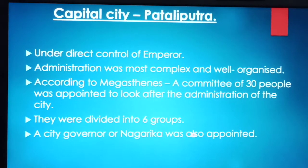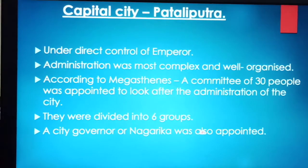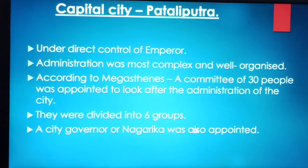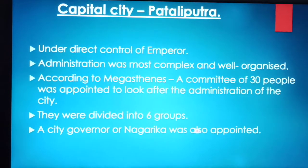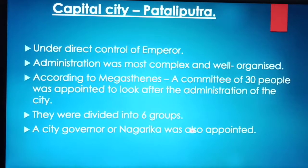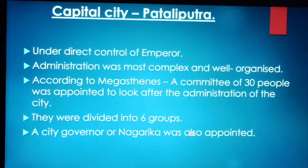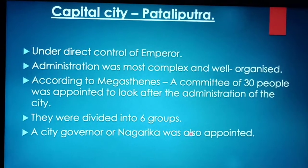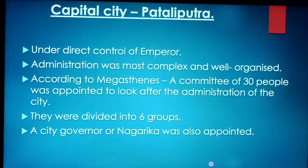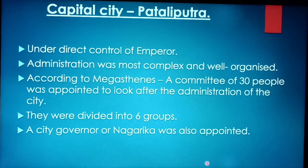We get this information from the source — the book written by Megasthenes, called Indica. A committee of 30 people was appointed to look after the administration of the city of Pataliputra. These 30 people were divided into 6 groups, each group having 5 members. A city governor was also appointed, who was called Nagarika.